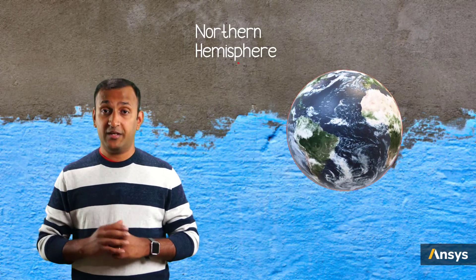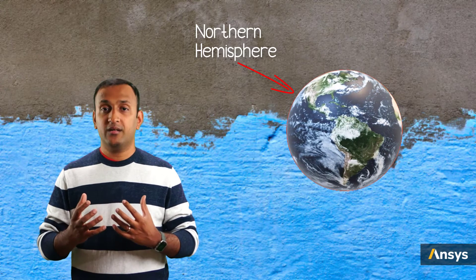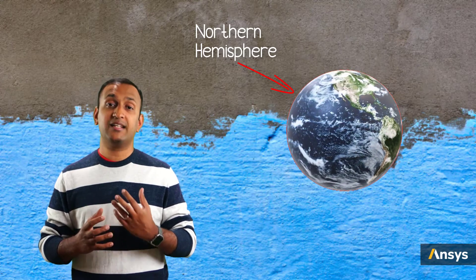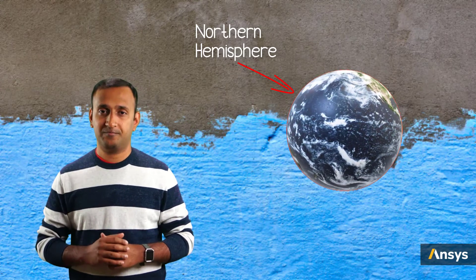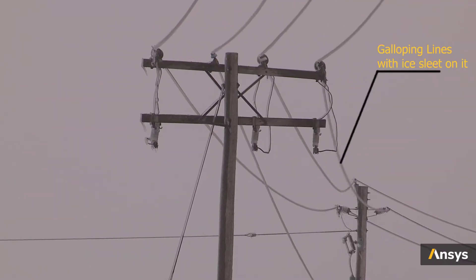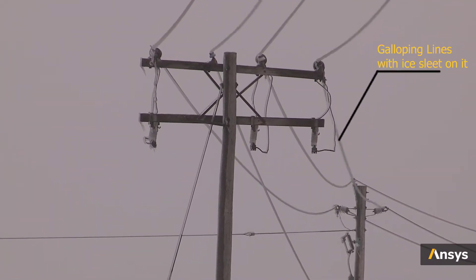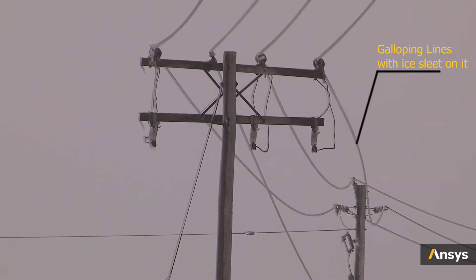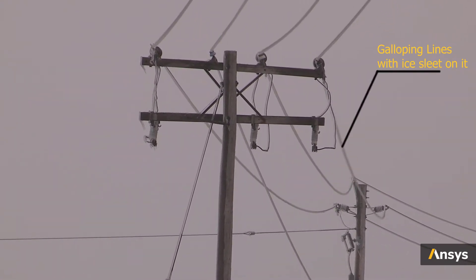Another example of flutter is seen in galloping transmission lines. This phenomenon is not that common in equatorial regions, but in the northern hemisphere where cold weather can lead to formation of ice leads on the transmission cables. These ice depositions can take the shape of an airfoil as the water drips and falls due to gravity.